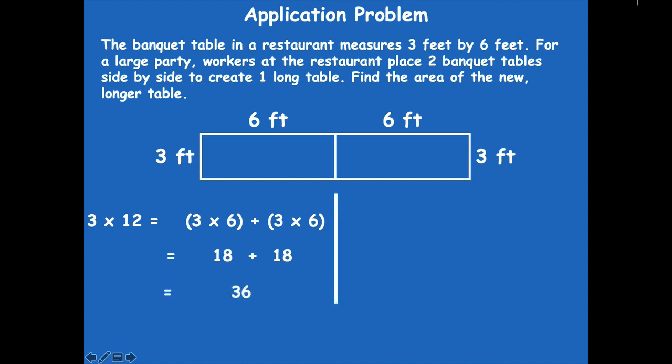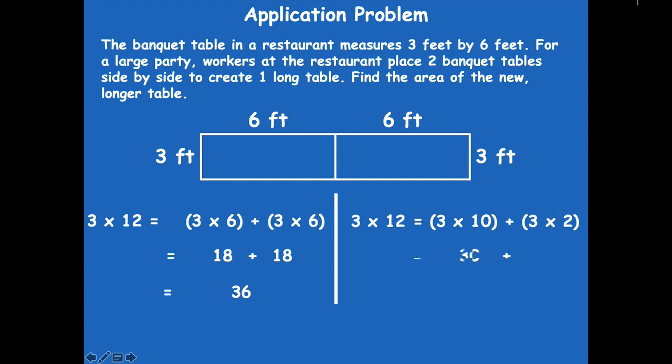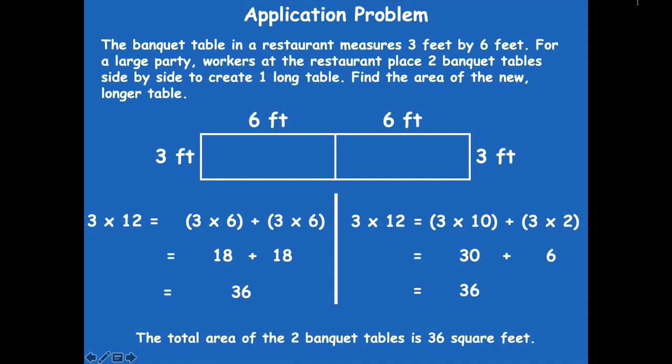Another way to solve this, knowing it's three times 12, I could use the distributive property to take my 12 and break it apart into 10 and two. Remember, one factor has to stay the same, so that's why you see three in all of those. Three times 10 is 30, and three times two is six, and 30 plus six is 36. To me, it's easier to add that than 18 plus 18, but whichever strategy you choose is fine. So the total area of the two banquet tables is 36 square feet — square feet because we're measuring area.